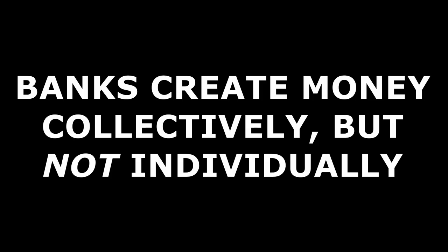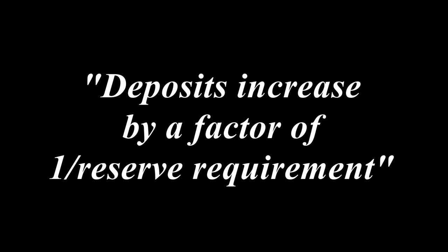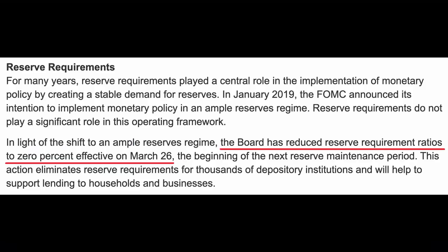So the Fractional Reserve Theory states that banks create money collectively but not individually. According to the American economist Joseph Stiglitz, deposits increase by a factor of one over the reserve requirement. Well, at least we know that theory is wrong.